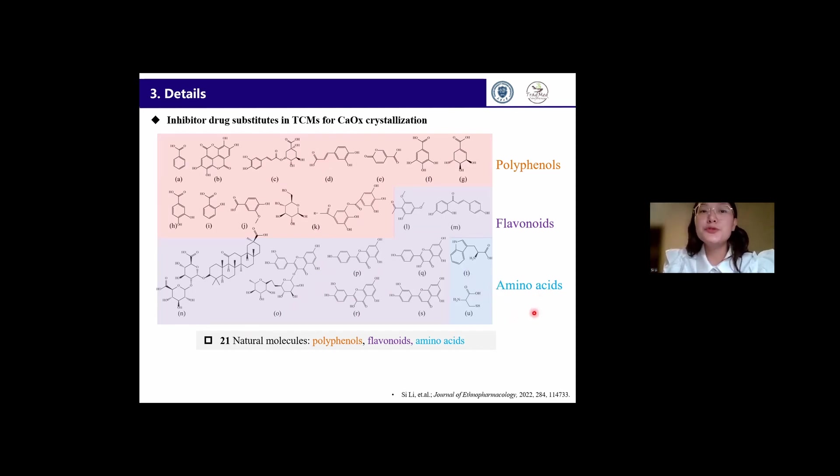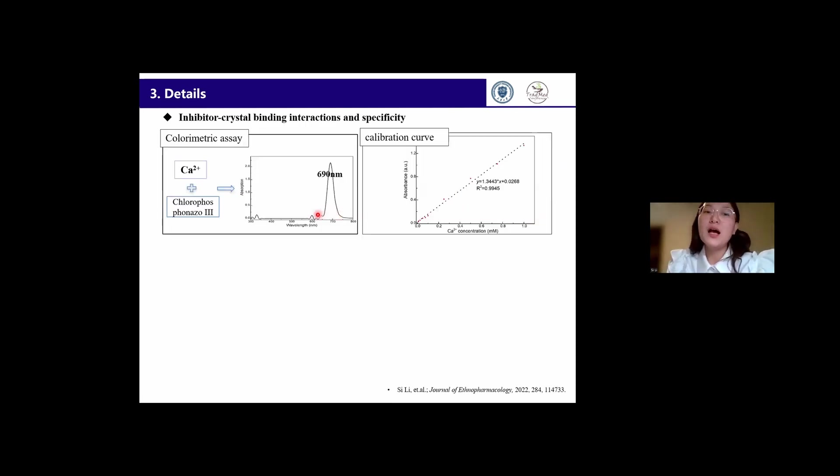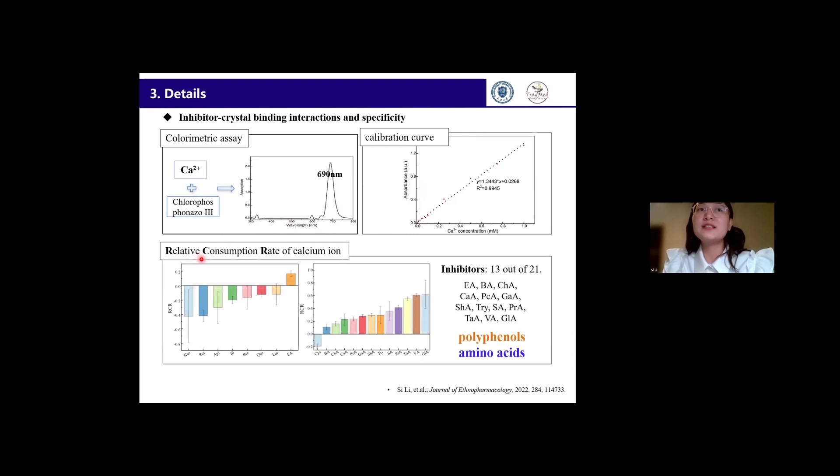In order to evaluate the inhibitory effects of these 21 molecules, we developed a high-throughput calorimetric screening method, and the values of the relative consumption rate indicate that 13 out of 21 molecules are inhibitors, and they are mostly polyphenols, flavonoids, and amino acids.